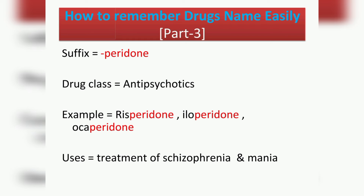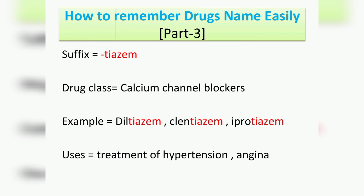The next suffix is '-peridone', which belongs to the drug class antipsychotics. Examples include risperidone, iloperidone, and ocaperidone. Their usage is the treatment of schizophrenia and mania.